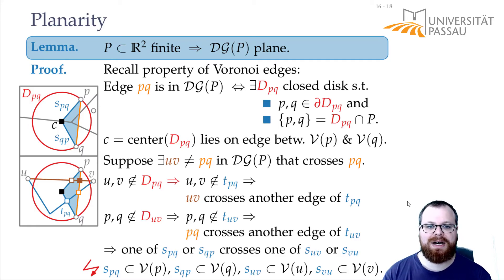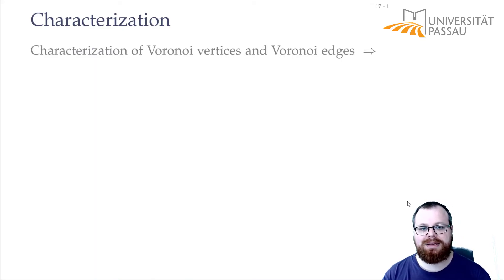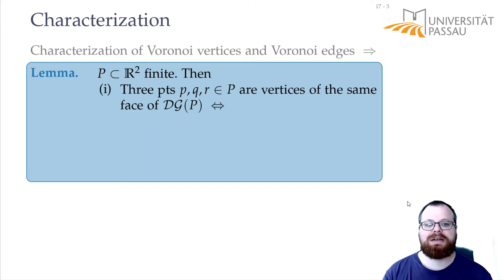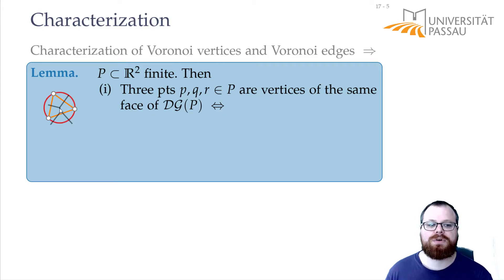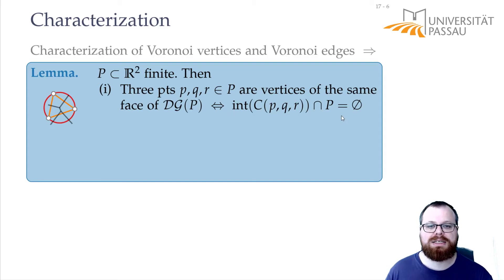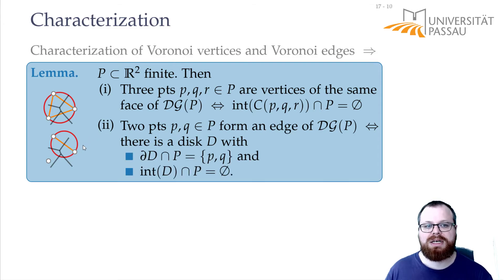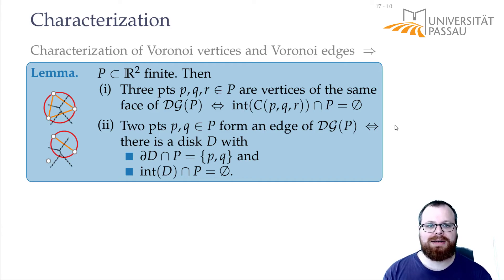This allows us to now define when we have an edge. If we have a finite point set, then three points are vertices of the same face in the Delaunay graph if and only if there is a Voronoi vertex — meaning there is some disk that contains these three points on its boundary but no other site in its interior. And we have an edge if and only if there is a Voronoi edge — so there is a disk that contains exactly these two sites on its boundary and no sites in its interior. A Delaunay triangulation is a triangulation that has the Delaunay graph as its subgraph.